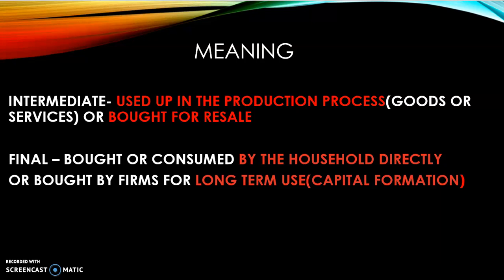Coming to the final good — again, two ways to identify it. One: if household people consume it. Whatever we as households directly buy and use for our home, it is all final goods. So anything bought by a household or individual is a final good or final expenditure.